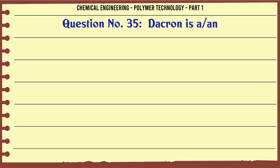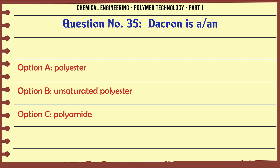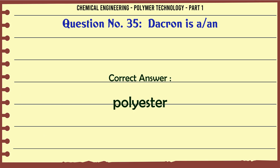Dacron is: A. Polyester, B. Unsaturated polyester, C. Polyamide, D. Inorganic polymer. The correct answer is Polyester.